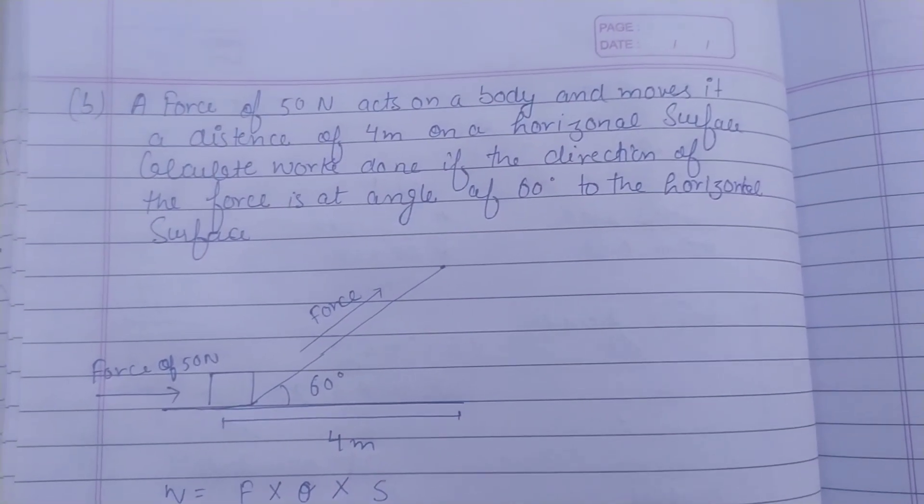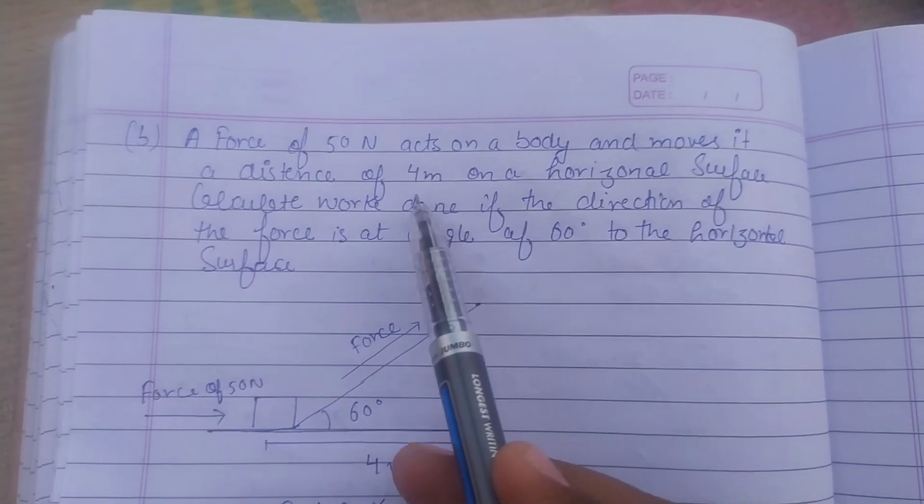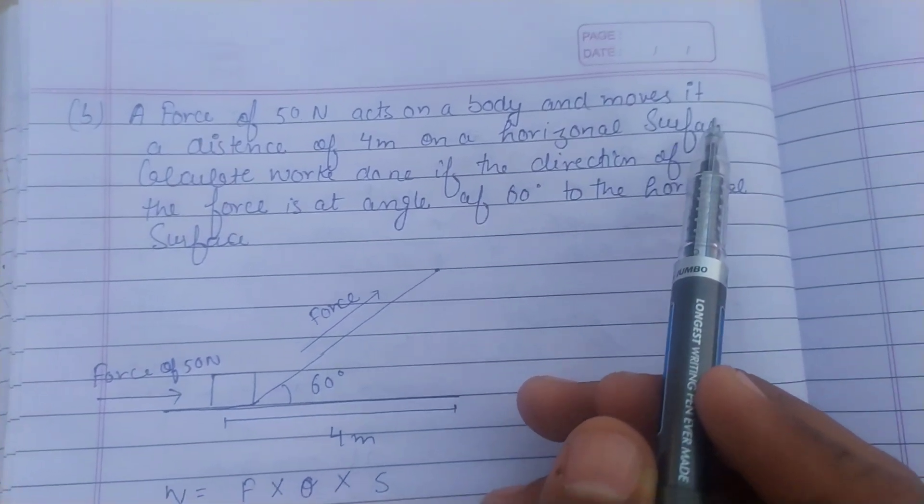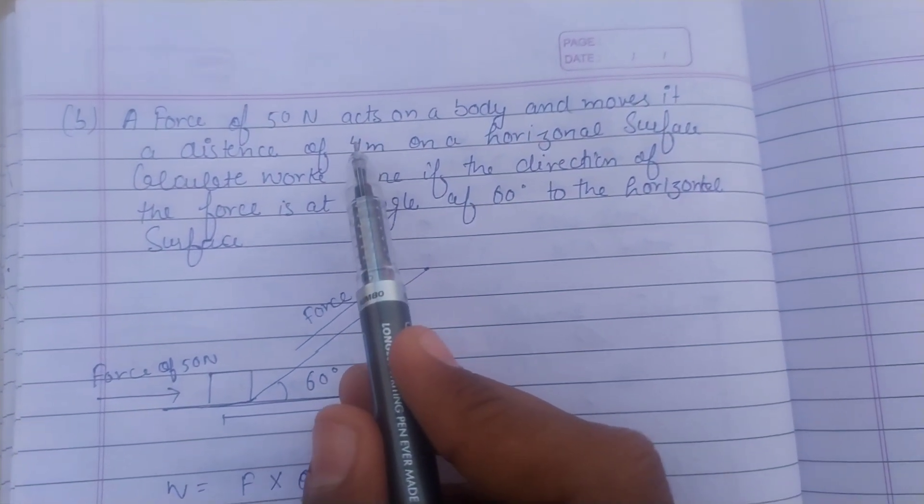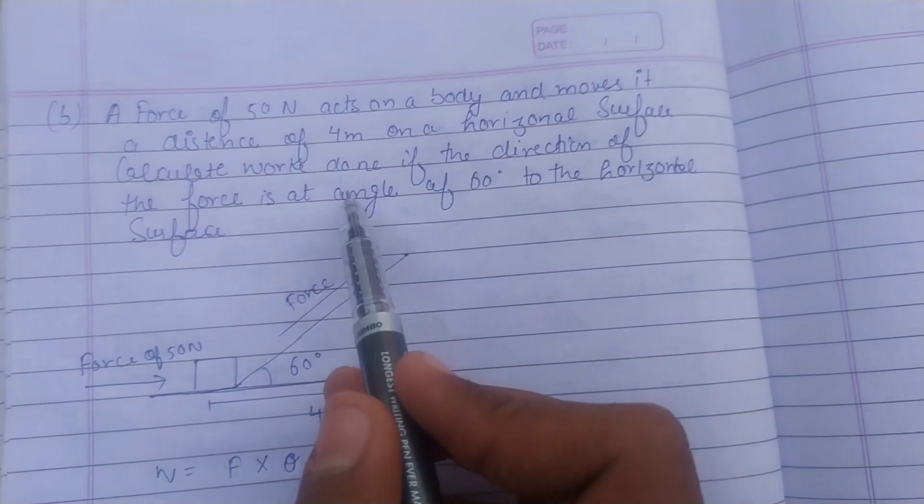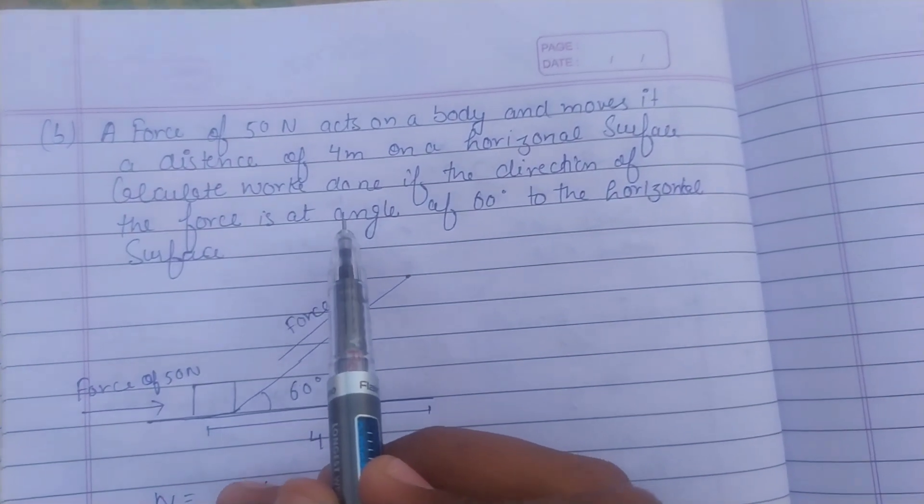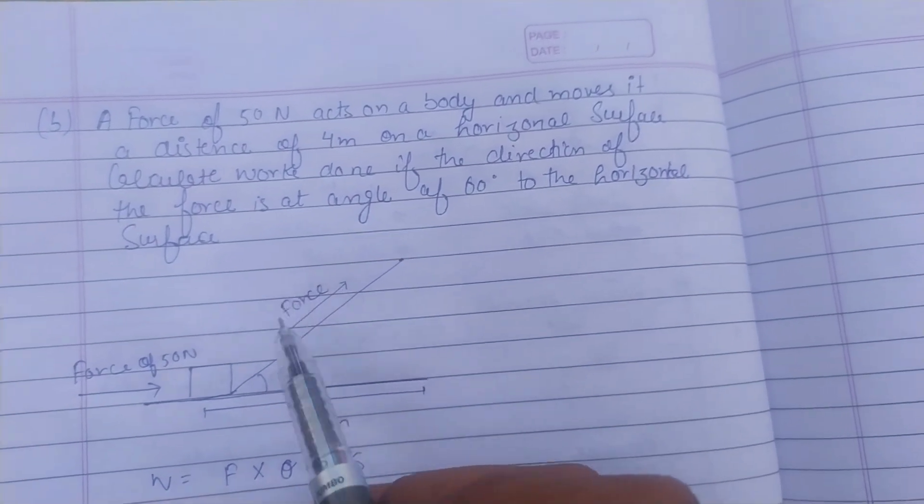A force of 50 Newton acts on a body and moves it a distance of 4 meters on a horizontal surface. Calculate the work done if the direction of the force is at an angle of 60 degrees to the horizontal surface.